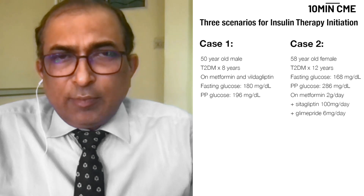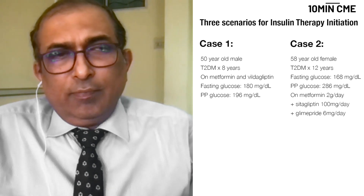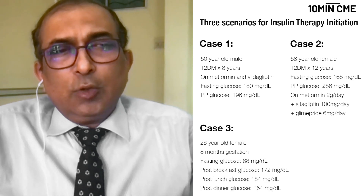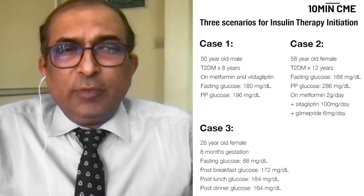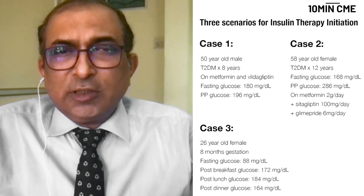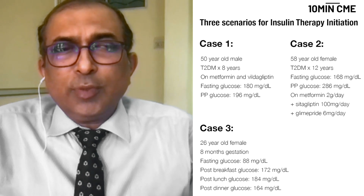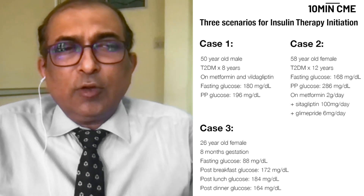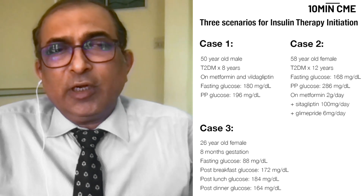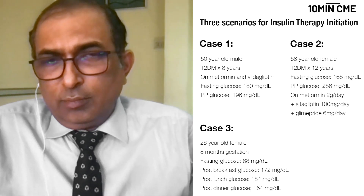What is the type of insulin we are going to use in this lady? As compared to a 26-year-old female who is in her eighth month of gestation, with a fasting glucose value of 88 and a post-breakfast glucose value of 172, post-lunch value of 184, and a post-dinner value of 164.